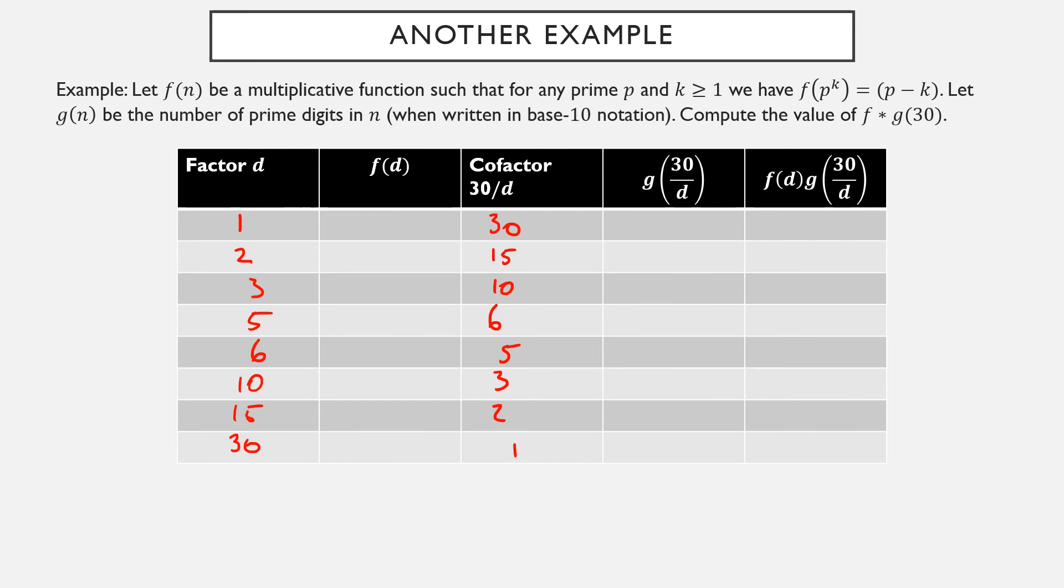So f is a multiplicative function that is not constantly zero. So f(1) has to be 1. f(2^1), well that's a prime power. So how do I compute the value of f? I take the prime and I subtract the power. So the prime is 2, the power is 1. 2 minus 1 is equal to 1. This is also a prime power, so I do the prime minus the power and I get out 2. 5 is a prime, so I compute the prime minus the power and I get out 4. Now 6 is not a prime number, so how am I going to apply f? Well, f was given to be multiplicative, so 6 can be factored as the relatively prime product 2 and 3. So since f was given to us to be multiplicative, f(6) must be the same thing as f(2) times f(3). f(2) was equal to 1 and f(3) was equal to 2, so therefore f(6) is equal to 2.